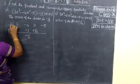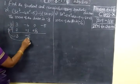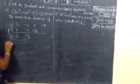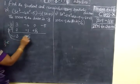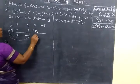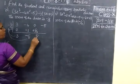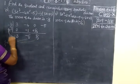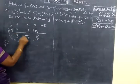Because 1 by 3 into 5 equals 5 by 3. Here you write 5 by 3. Now again you multiply.